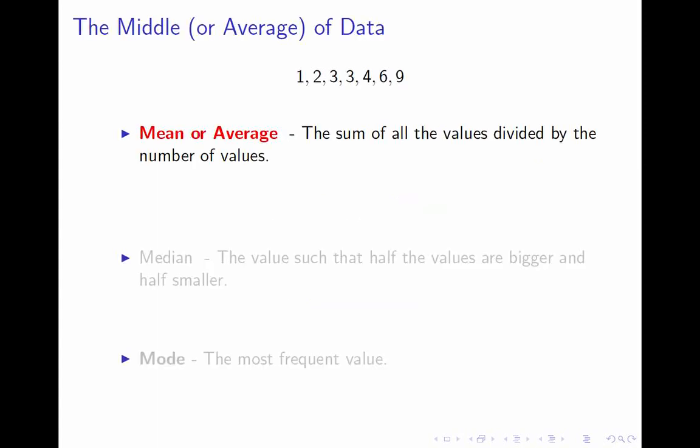By 'central tendency' I mean something that tells you the middle or typical value — that's the intuitive sense behind the average. 'Average' gets used differently in statistics than in everyday life. In everyday life, average means you add up all the numbers and divide by how many there are. In statistics, that's called the mean, and it's just one of several averages. An average is any measure of central tendency.